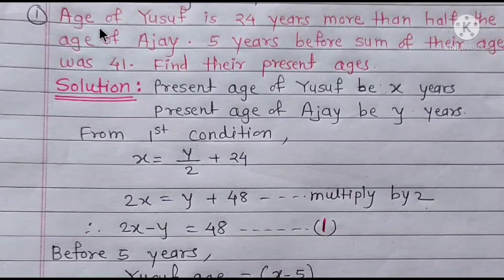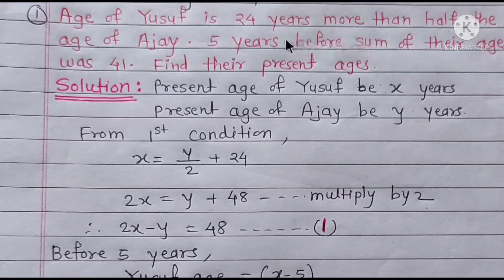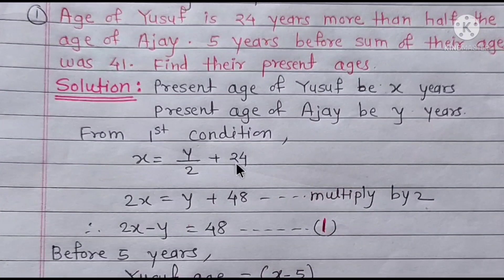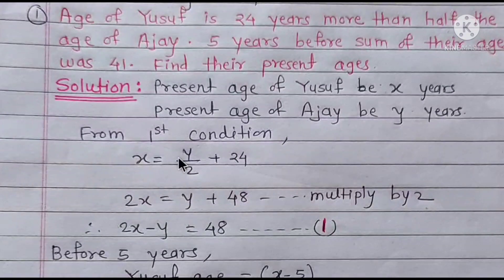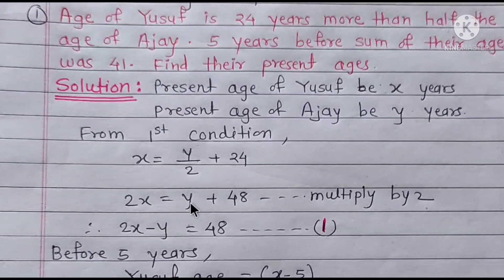From the first condition, Yusuf is 24 years more than half of Ajay's age, so X is equal to Y upon 2 plus 24. Multiplying both sides by 2 to eliminate the fraction: 2X equals Y plus 48, which gives us 2X minus Y is equal to 48. This is Equation 1.